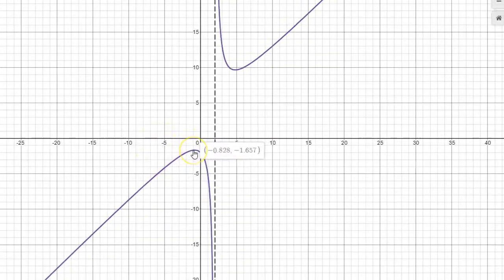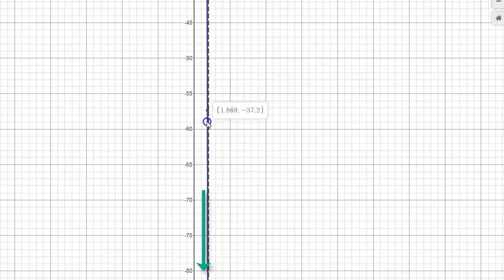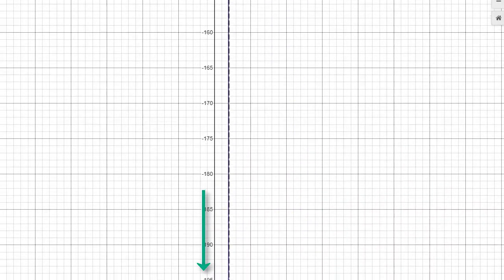if we allow x to get close to 2 from the left side of 2, like 1.99999, we see this graph just zooming off downward in the negative direction towards negative infinity. Again, I can move the graph and kind of get that sense. Notice now I'm getting close to x equals 1.9 and beyond, and the output values just seem to be getting bigger and bigger and bigger in the negative direction.